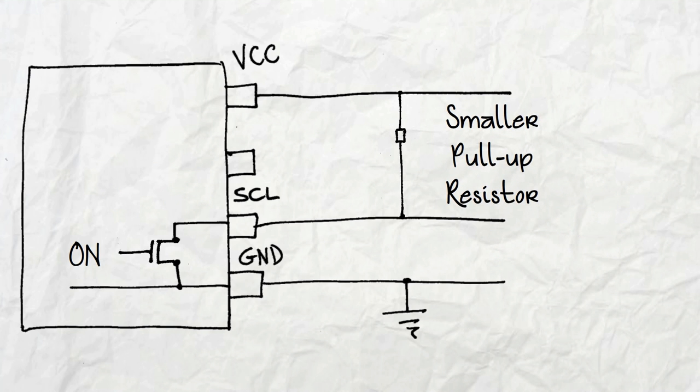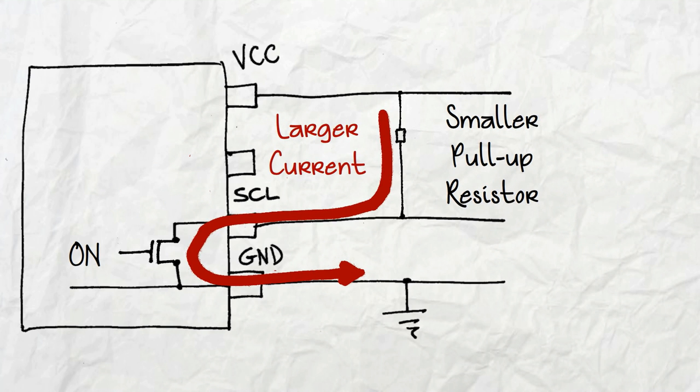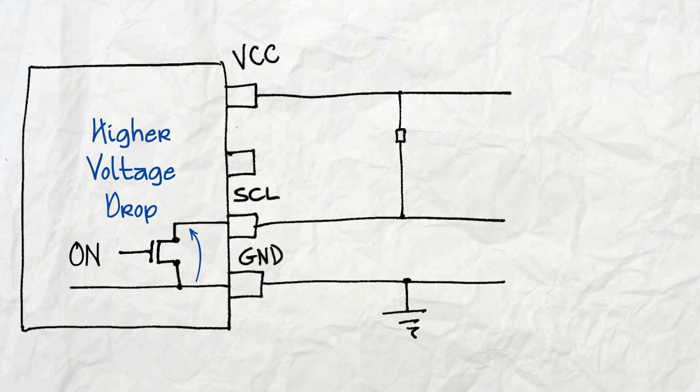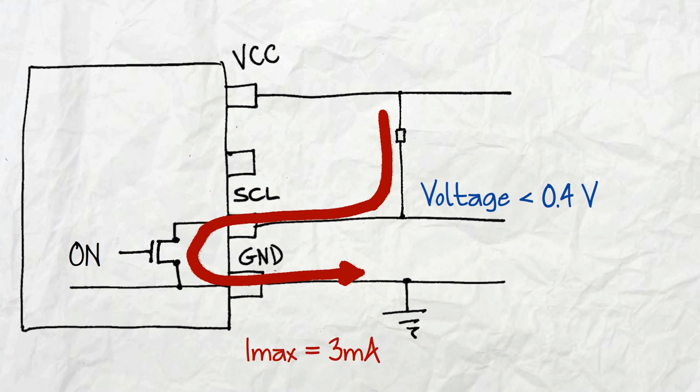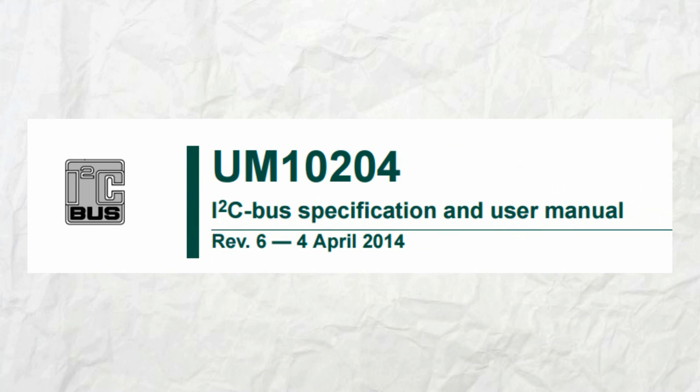If you have a smaller pull-up resistor, you allow a larger current to flow through the device. That leads to a higher voltage drop across the transistor, and to a higher voltage on the clock line. But this voltage should not exceed 0.4 volts, because it corresponds to the maximum current load of 3 milliamps that the transistor can handle. These values are specified by the I2C bus user manual.